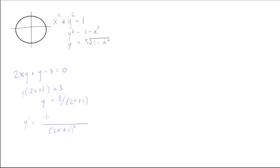which is 0, times 2x plus 1, minus 3 times the derivative of the bottom is times 2. So we get y prime is equal to negative 6 over 2x plus 1 all squared.